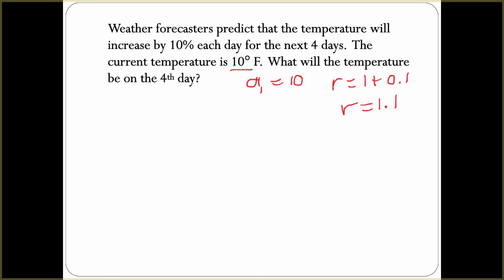We're doing this for four days, so our function is a_n is 10 degrees. That's our starting point, our ratio is 1.1, and this is n - 1.